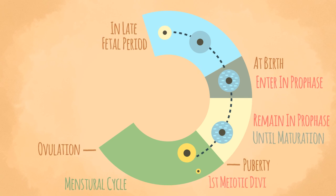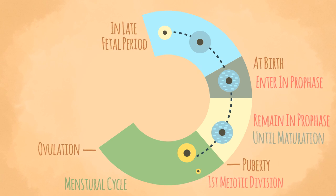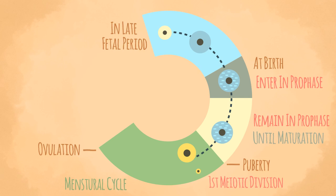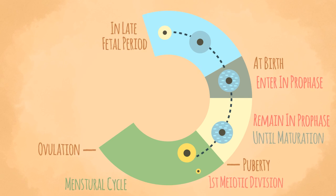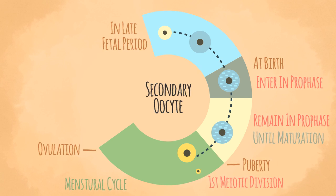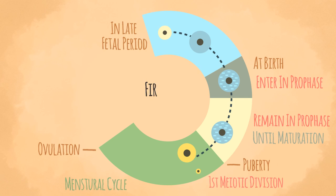With each menstrual cycle, a few primary oocytes begin to mature and complete the first meiotic division shortly before ovulation. The first meiotic division of a primary oocyte produces two unequal daughter cells, each with the haploid number of chromosomes. The large cell, which receives most of the cytoplasm, is called the secondary oocyte.